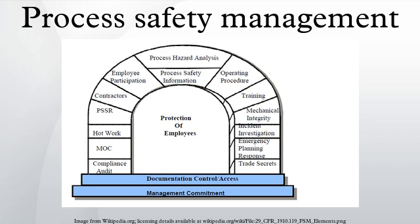Process safety information, or PSI, might be considered the keystone of the PSM program, as it tells you what you are dealing with from both the equipment and the process standpoint. To comply with OSHA PSM regulations, the process safety information should include information pertaining to the hazards of the highly hazardous chemicals used or produced, the technology of the process, and the equipment in the process.